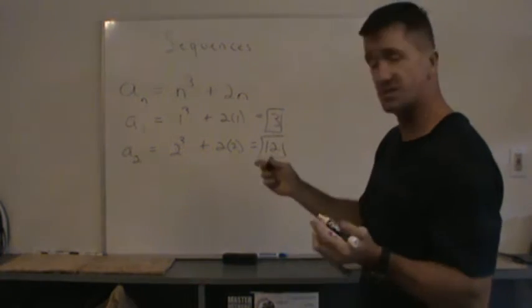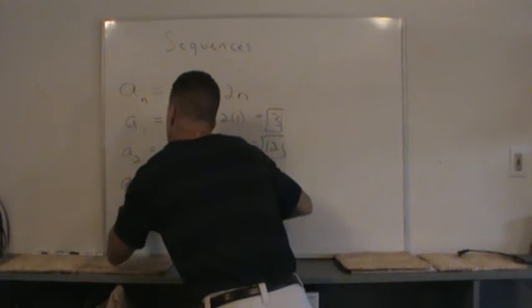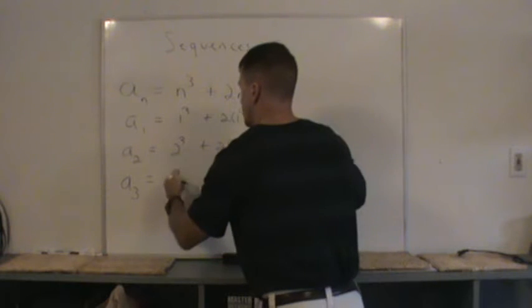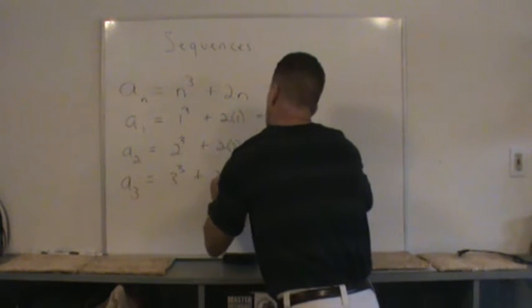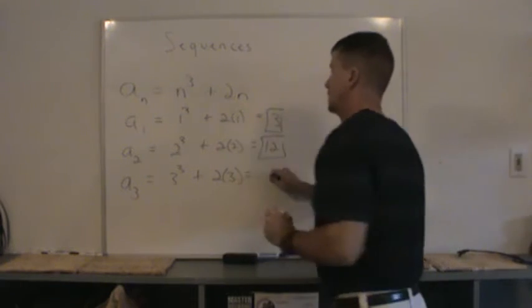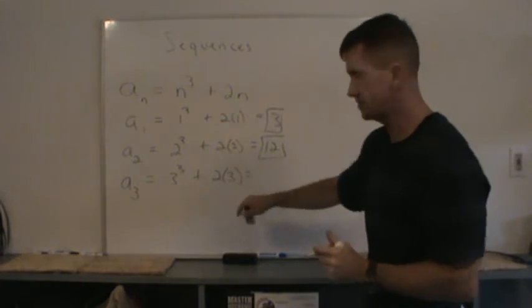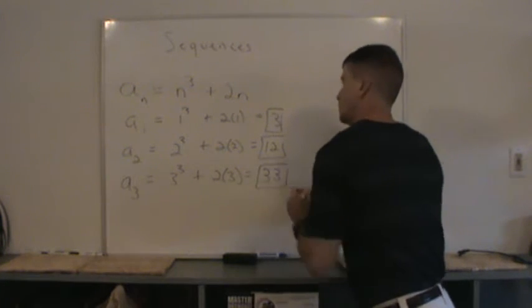And it's this simple. We'll find one more term here. How about a_3? That's the third term of the sequence. Substitute 3: 3 cubed plus 2 times 3. And you get 27 plus 6, which is 33.